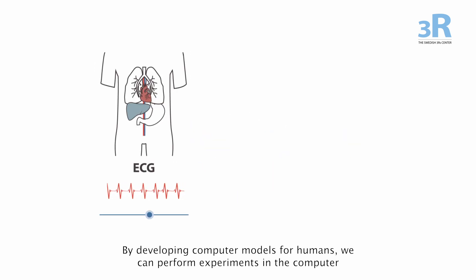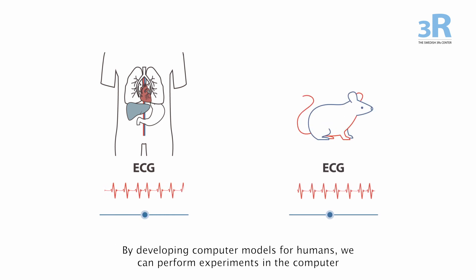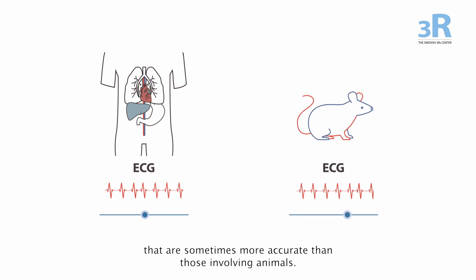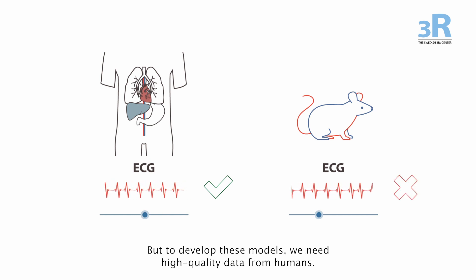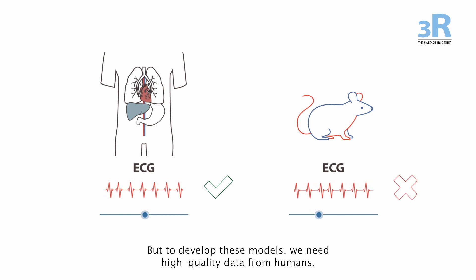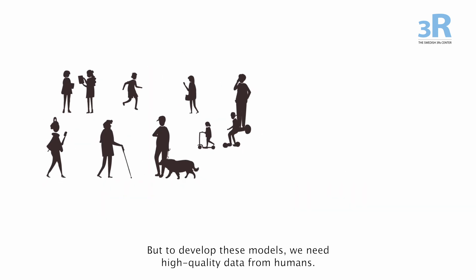By developing computer models for humans, we can perform experiments in the computer that are sometimes more accurate than those involving animals. But to develop these models, we need high-quality data from humans. These data can come from blood and tissue samples or cultured cells.